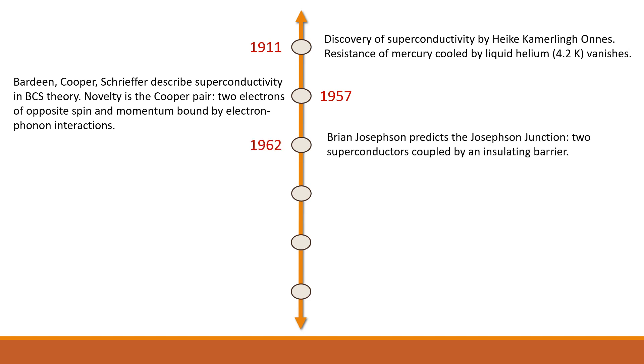In 1962, Brian Josephson predicts the Josephson Junction, which is a device consisting of two superconductors coupled by an insulating barrier. And just a year later, at Bell Labs, Rawal and Anderson actually created the first Josephson Junction.